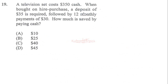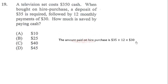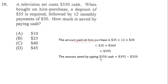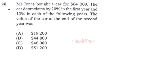Question 19: a television set costs three hundred fifty dollars when bought on hire purchase. A deposit of thirty-five dollars is required followed by twelve monthly payments of thirty dollars. The amount paid on hire purchase is thirty-five plus twelve times thirty dollars. Twelve times thirty gives three hundred sixty, plus thirty-five gives three hundred ninety-five dollars. Paying cash is three hundred fifty dollars, so the amount saved is three hundred ninety-five minus three hundred fifty, which equals forty-five dollars.